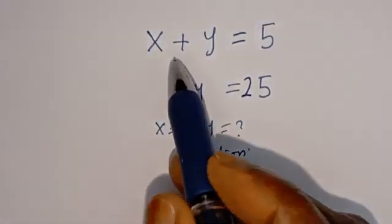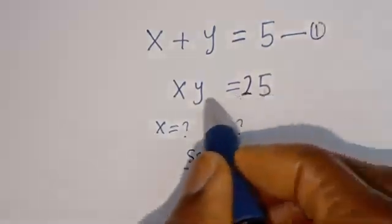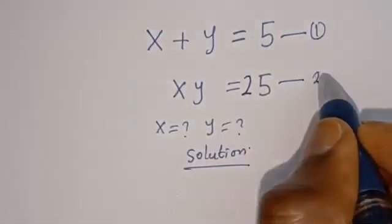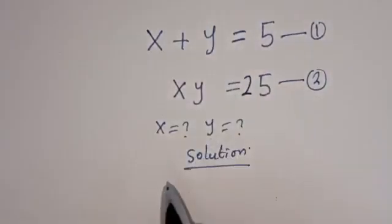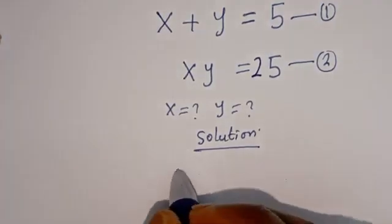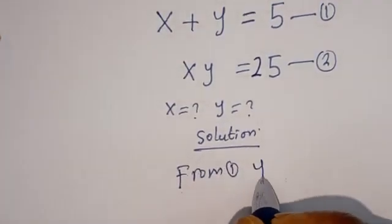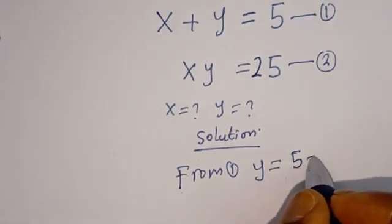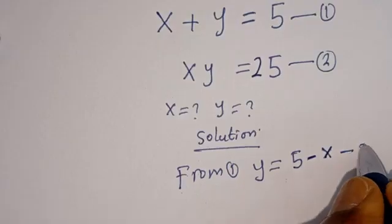From here, x plus y is equal to 5 — let's call this equation 1. x times y is equal to 25 — let's call this equation 2. From equation 1, y is equal to 5 minus x. Let's call this equation 3.